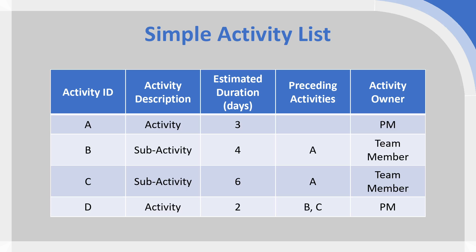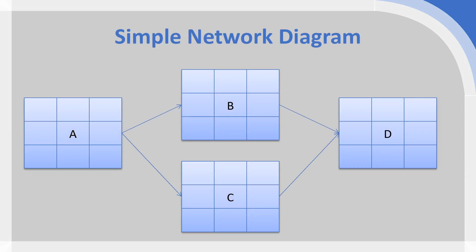The preceding activities allow us to create a simple network diagram. We start with activity A, then move on to B and C, which can be run in parallel, and then finish with activity D. We can see that we have squares around each of the activity codes, and we're going to fill these in with a range of numbers, which we'll look through one by one.